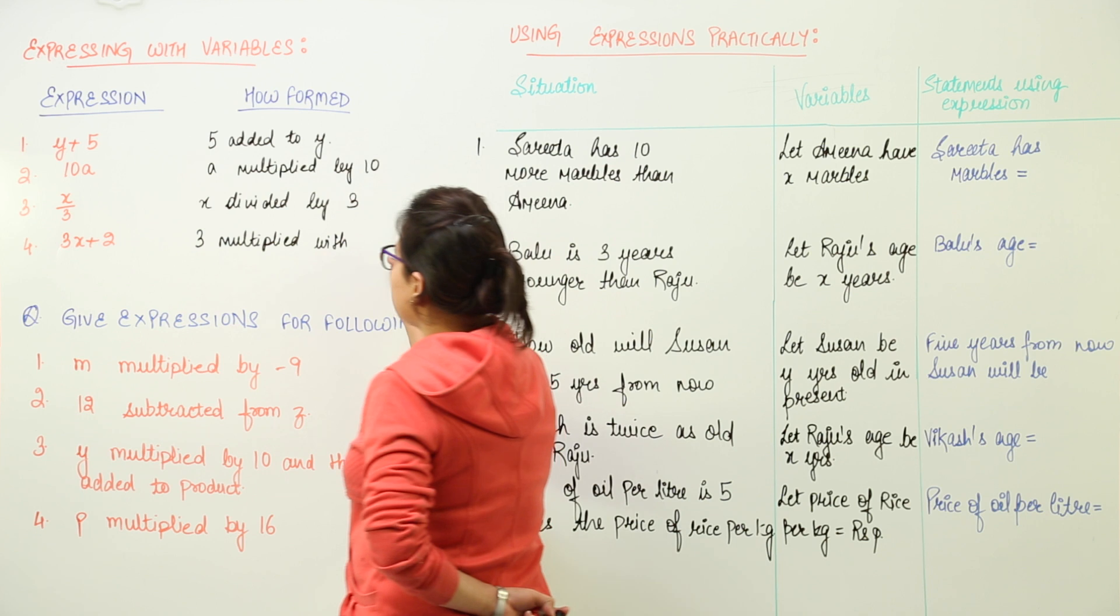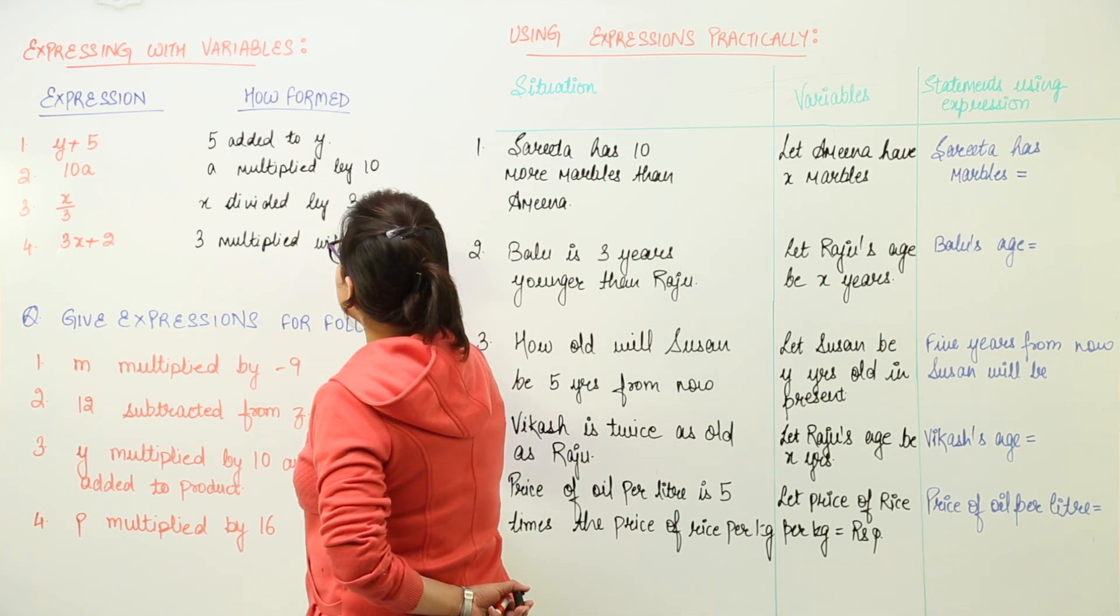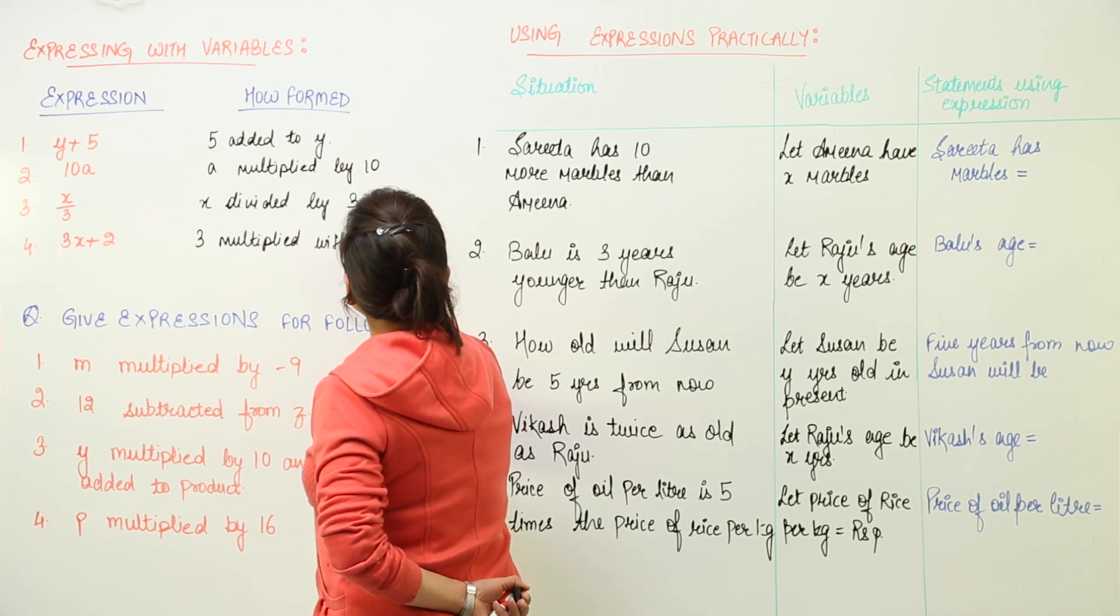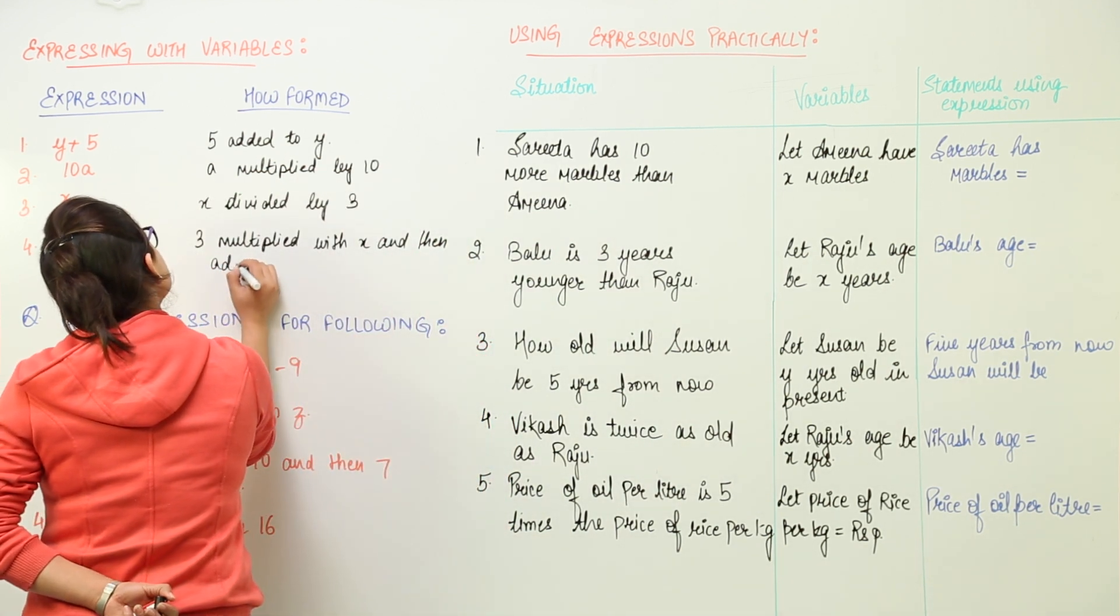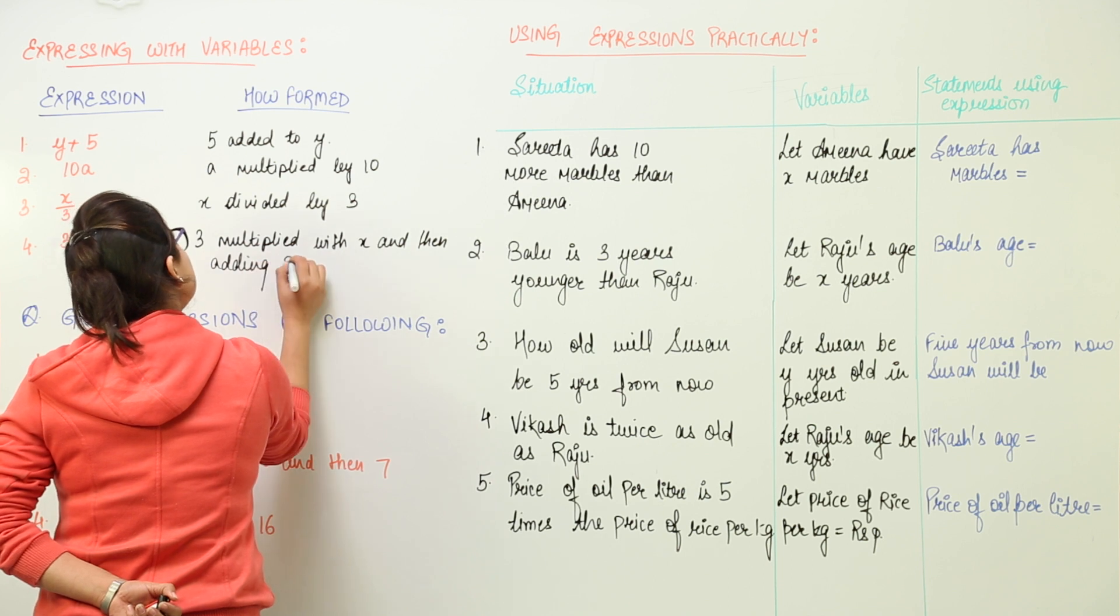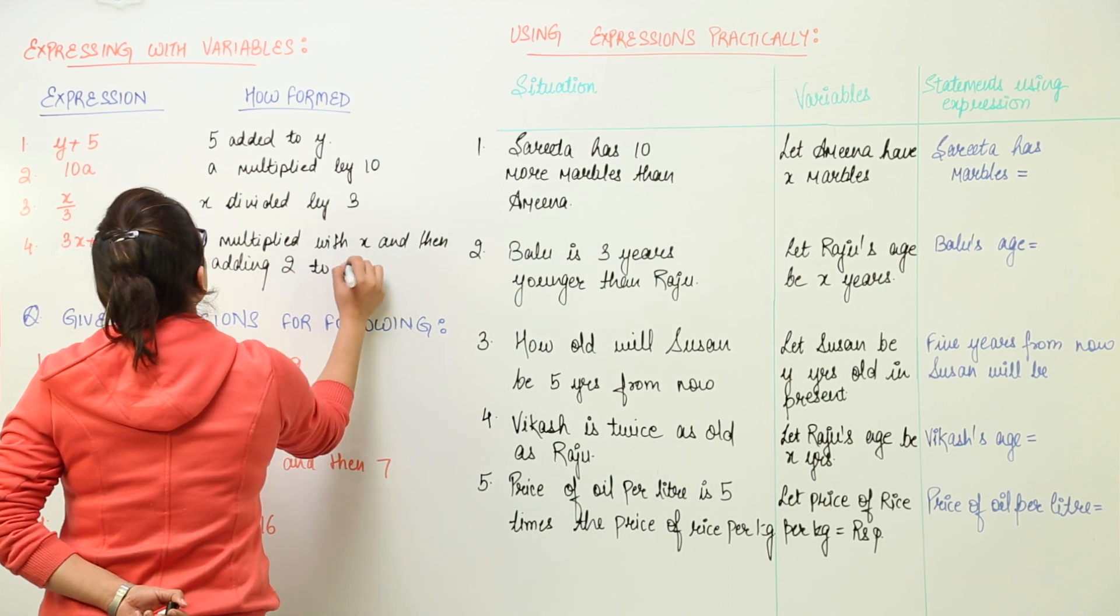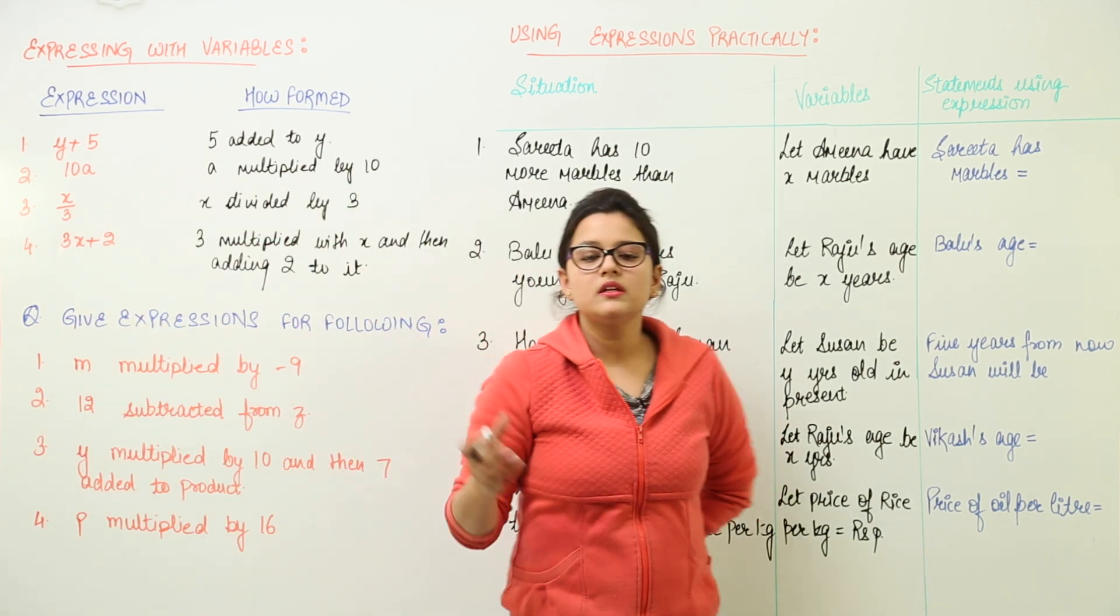So here I am writing 3 multiplied with x and then the next step would be adding 2 to it. This is how we write down the expression in detailed form.